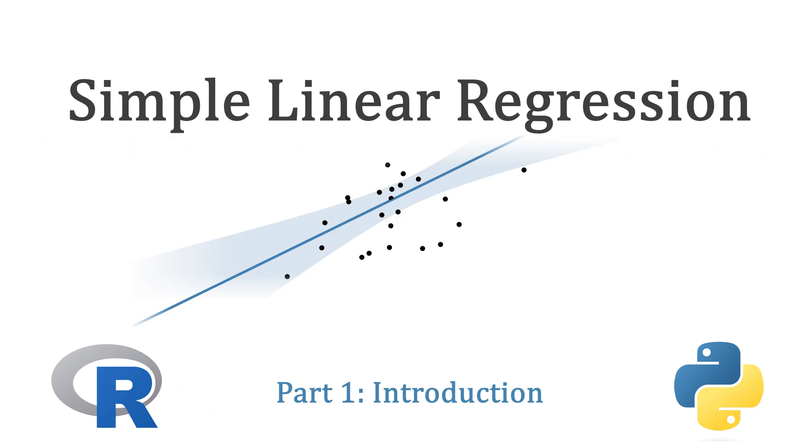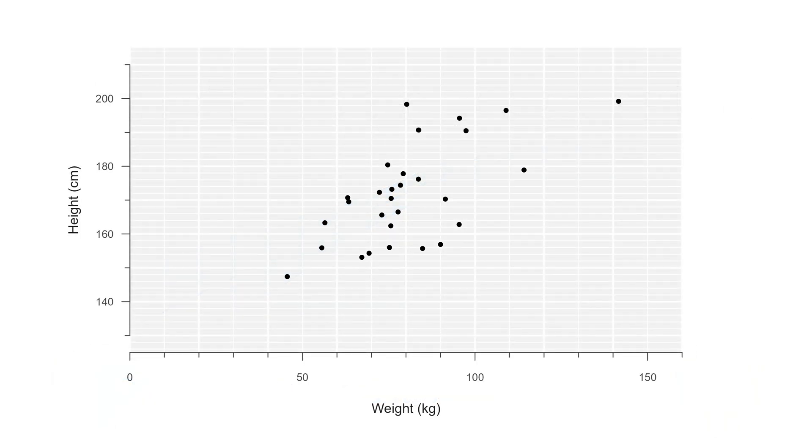Simple linear regression is a method to model the relationship between two variables, like height and weight. In this figure we see weight on the x-axis and height on the y-axis. The black dots represent measurements of 30 different individuals.